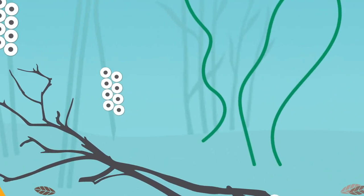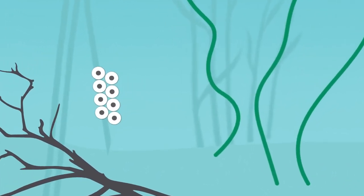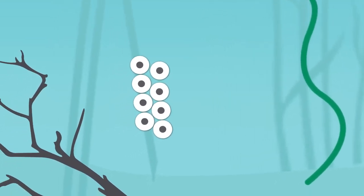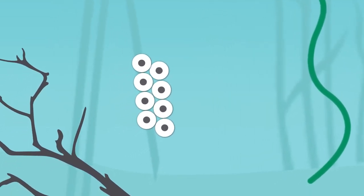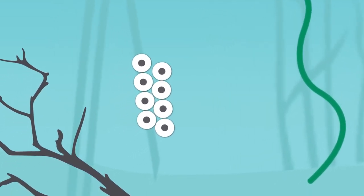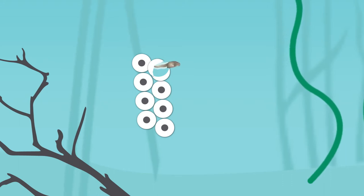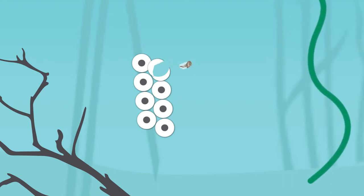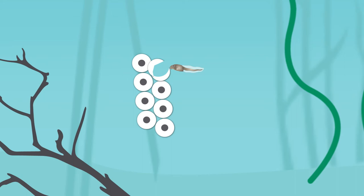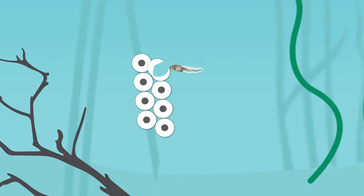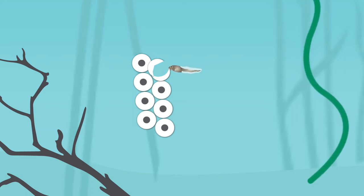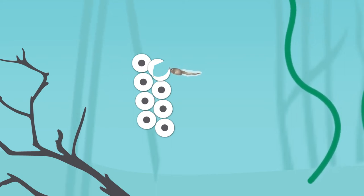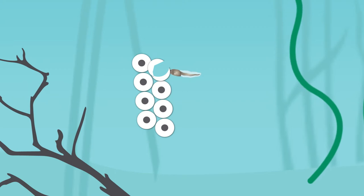Spawn is the term used to describe the eggs and the jelly mass that surrounds them. Once laid, frog eggs soon hatch into tiny, vulnerable tadpoles. These tadpoles may feed on the remaining egg mass before beginning to graze on algae, all the while growing and developing distinctive features.